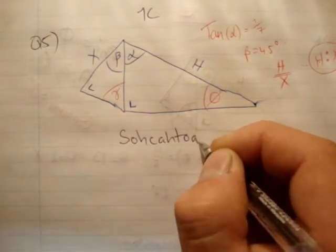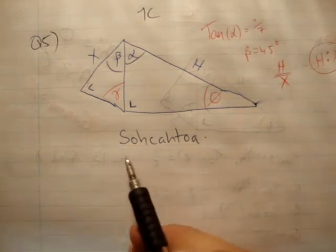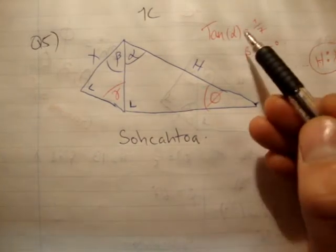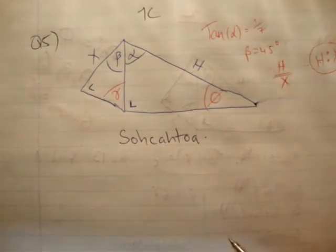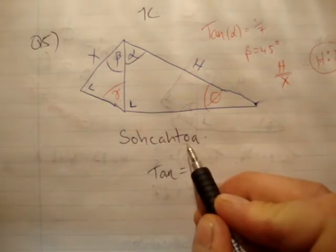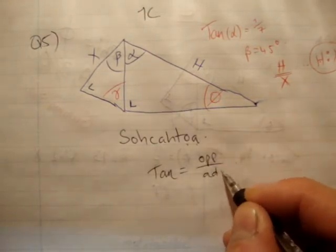If you don't know where to start, just use the same procedure as usual, which is use Sohcahtoa and fill in all the bits and pieces that you know. Now what do we know? We know that tan alpha is equal to 1 over 7. What's tan? Tan is equal to opposite over adjacent.